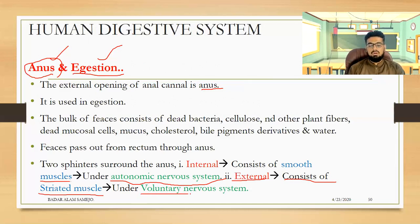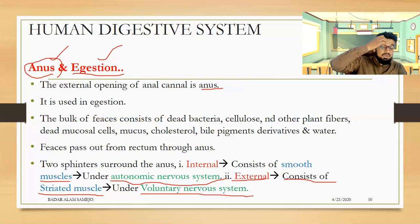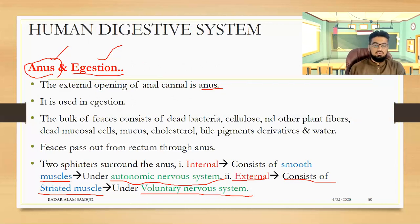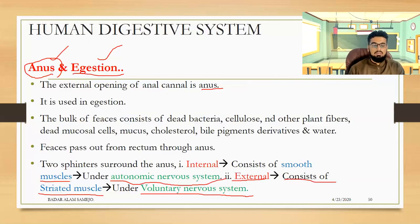The external sphincter consists of striated muscles and works under the voluntary nervous system, so its opening and closing is in our conscious control. The internal sphincter is not in our conscious control. When both sphincters open, the undigested food is defecated out of the alimentary canal, completing the digestion process. We will next discuss disorders of the digestive system.